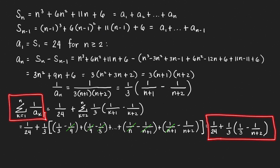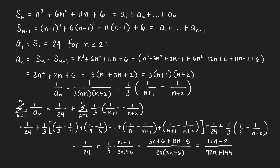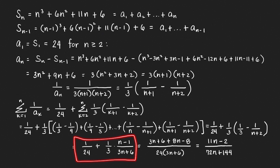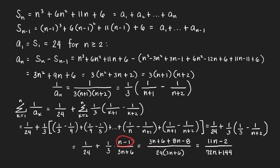We now have the closed form: 1 over 24 plus one-third times (1/3 minus 1/(n+2)). Combining 1/3 and 1/(n+2) into a single fraction gives (n minus 1) over (3n+6). Then combining with 1 over 24 using LCD of 24(3n+6), the numerator becomes 3n+6 plus 8(n minus 1) equals 11n minus 2. So the final answer is (11n minus 2) over 24(3n+6), as posted by Marvin Cato on our Facebook page.